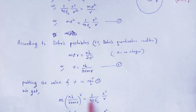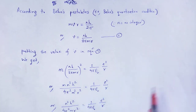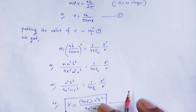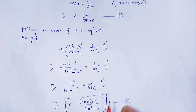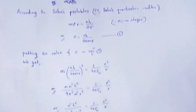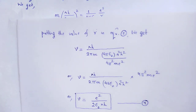The value of v is substituted into equation number 1. Simplifying it, we obtain the value of R: R = 4πε₀ n²h² / (4π²me²). This is the value of that radius.